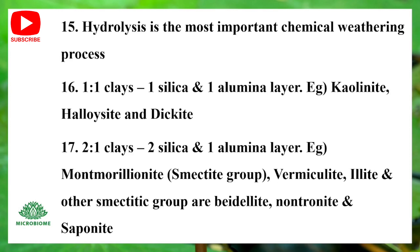Hydrolysis is the most important chemical weathering process. 1:1 clays have 1 silica and 1 alumina layer; examples include Kaolinite, Halloysite, and Dickite. 2:1 clays have 2 silica and 1 alumina layer; examples include Montmorillonite, Smectite group, Vermiculite, Illite, Beidellite, Nontronite, and Saponite.